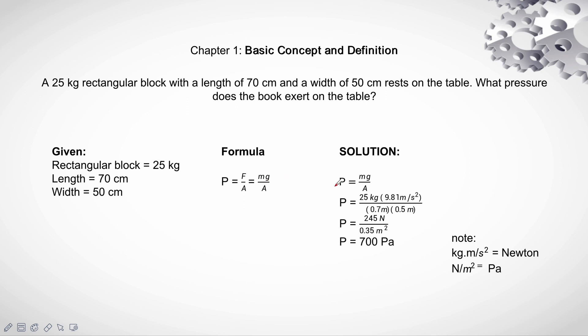So, let's try to solve it using the formula. Pressure equals mass times gravity over the area. Pressure equals 25 kg times 9.81 m per second squared over 0.7 m times 0.5 m.